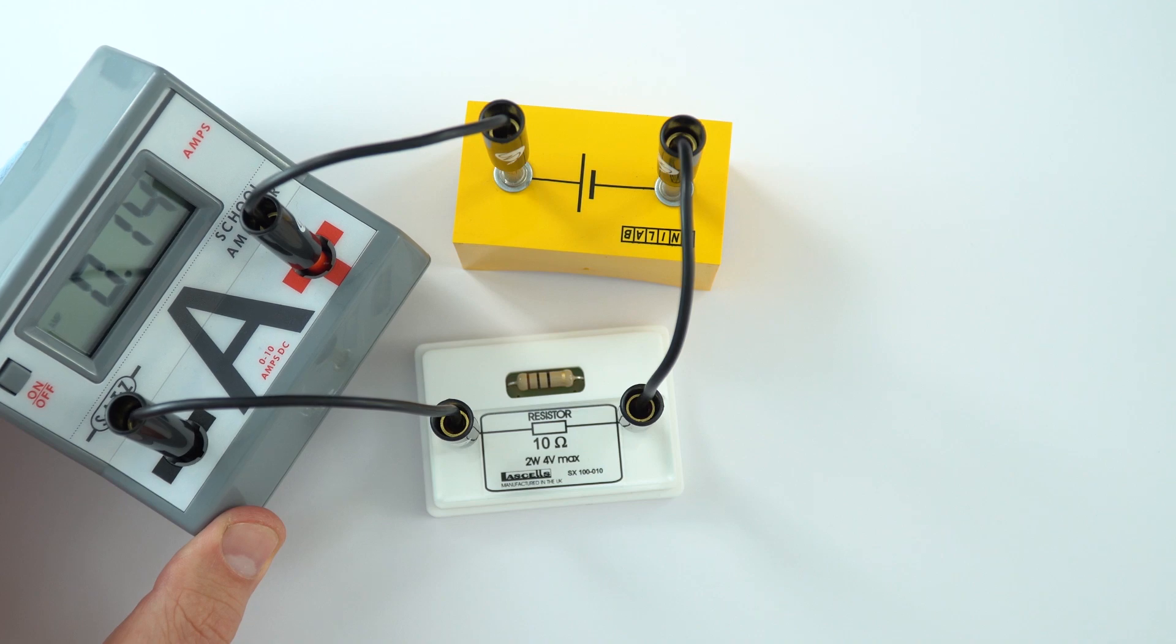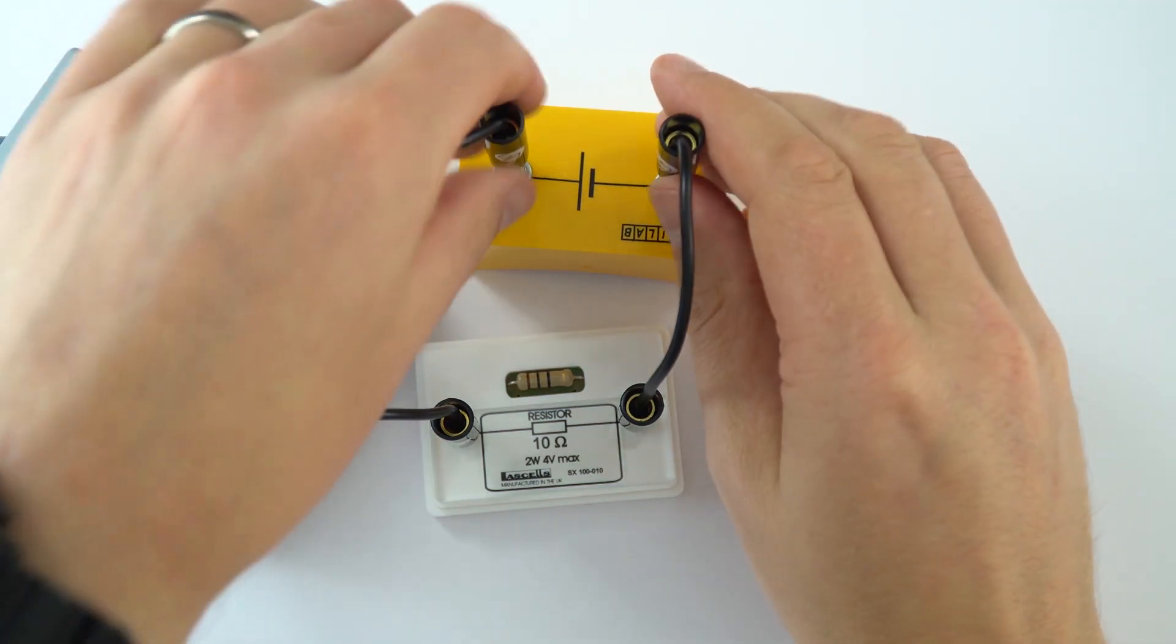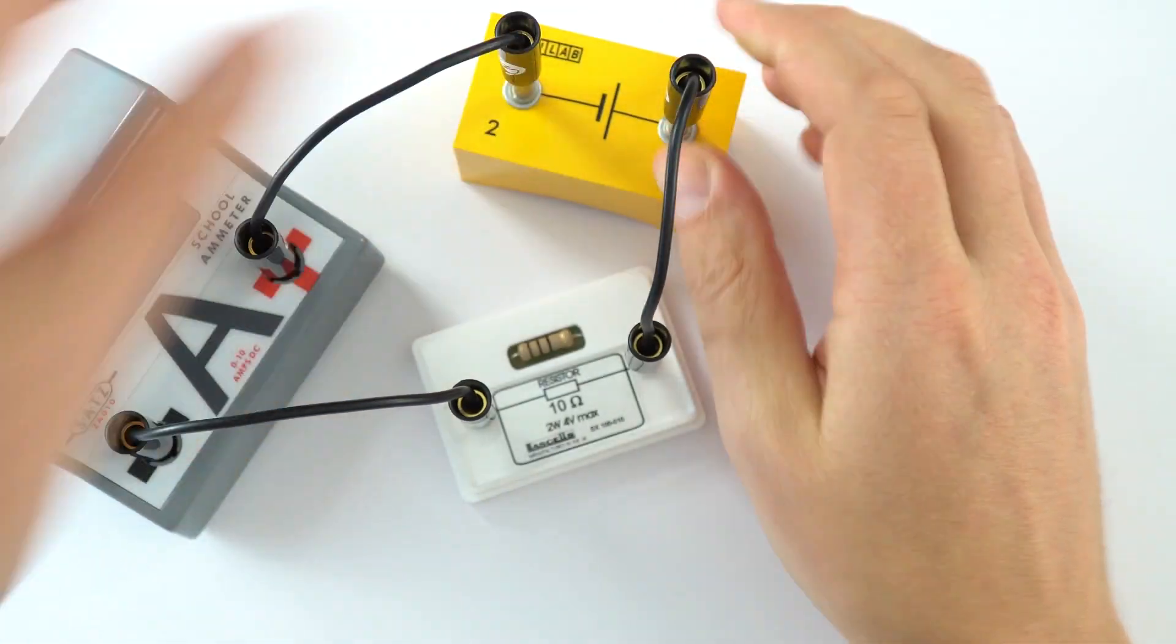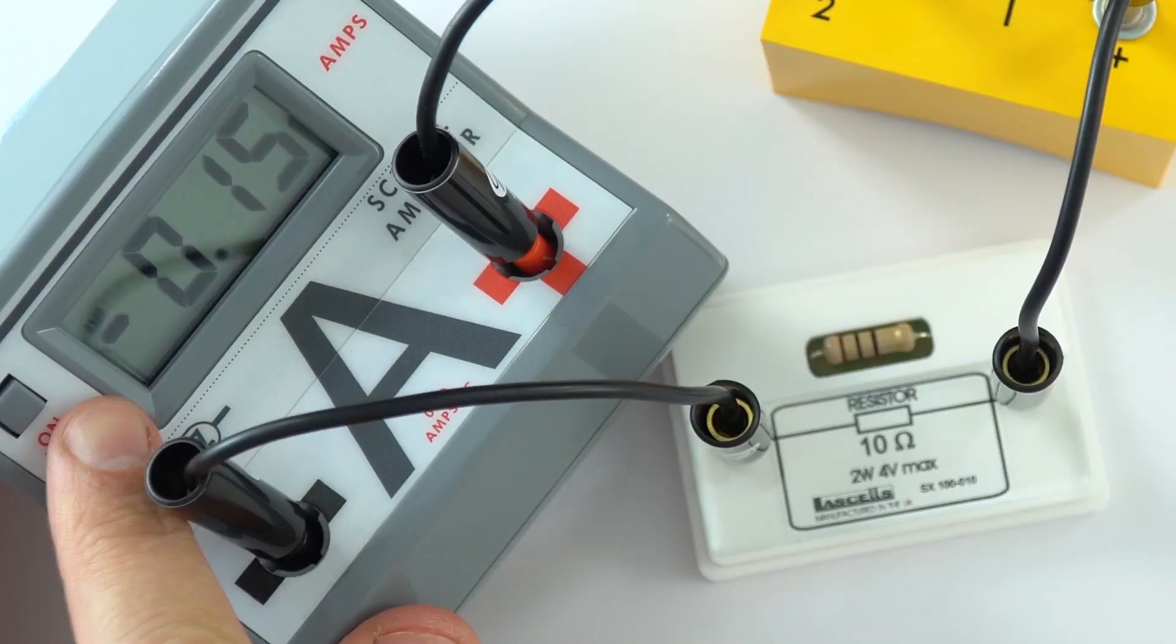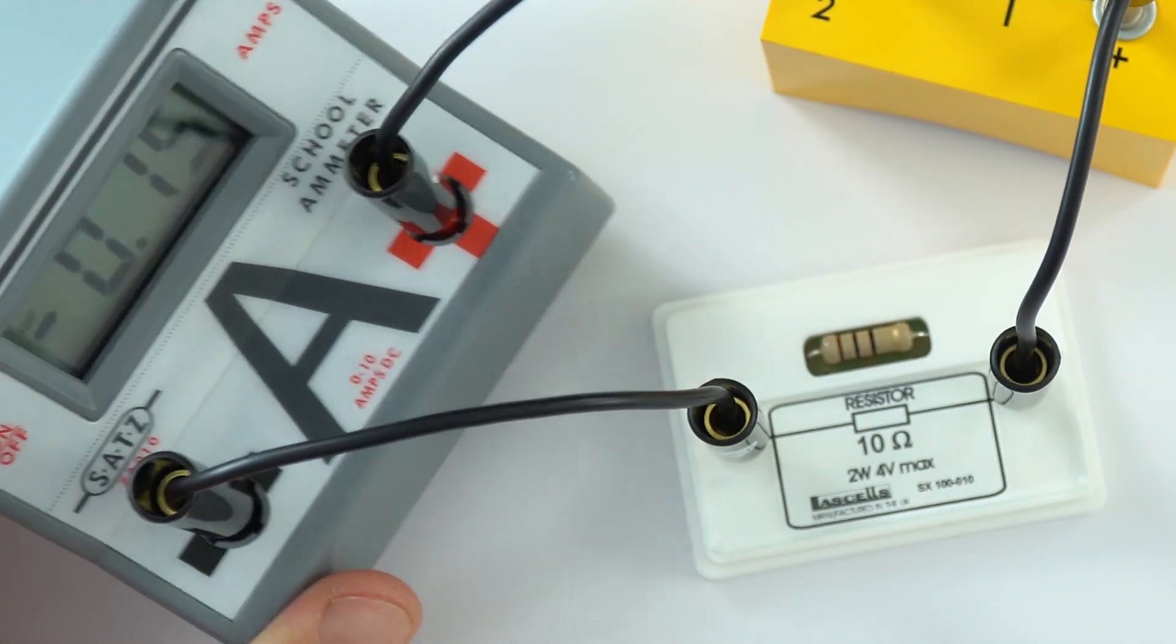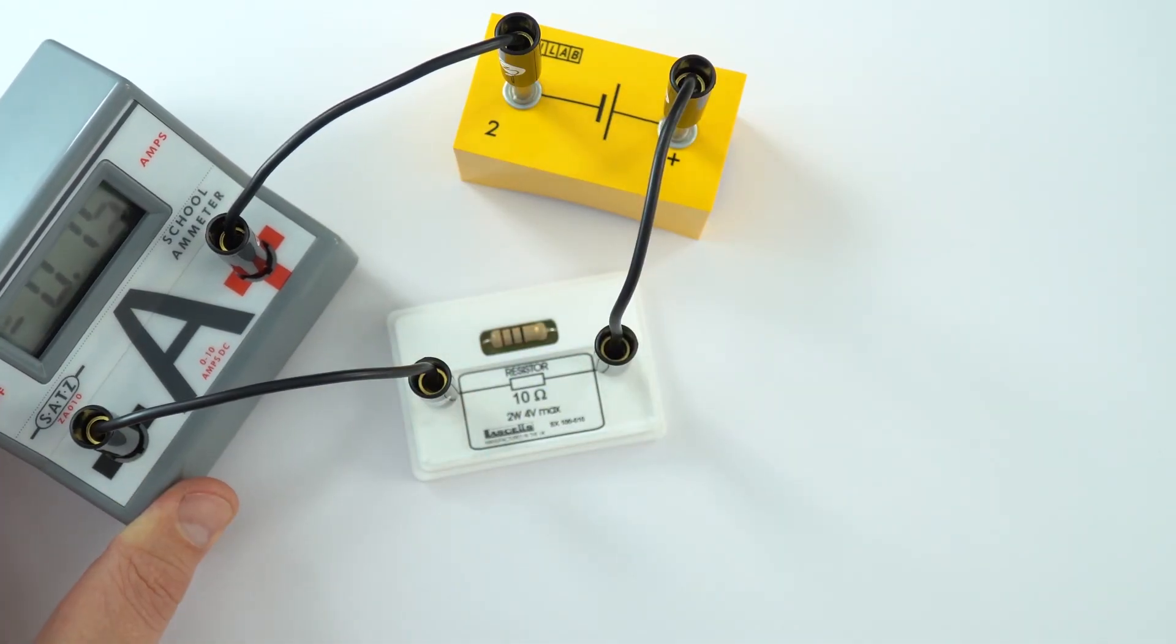We can see that this is a positive value. In actual fact, if I was to turn the cell around this way, if I put that in the other direction, we now get a negative reading. It's still 0.14, it's about the same value as it was before, but now we've got a negative value of the current.